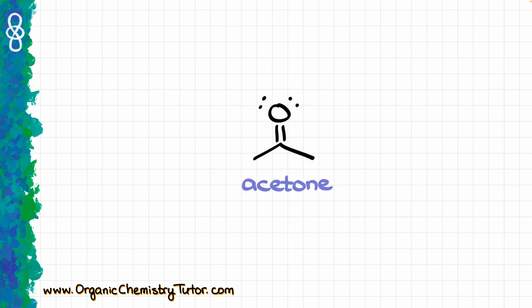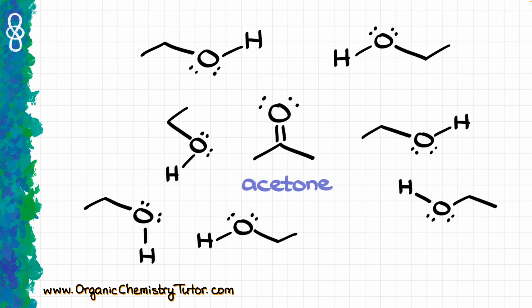This part is fairly important: molecules can still participate in hydrogen bonding even if they can only be acceptors. For instance, take acetone dissolved in ethanol. Ethanol can be both donor and acceptor, while acetone can only be an acceptor. By itself, acetone doesn't exhibit hydrogen bonding, but as soon as we have a donor like ethanol, acetone can now participate. Remember, just because a molecule cannot be both donor and acceptor doesn't mean it cannot participate in hydrogen bonding at all.